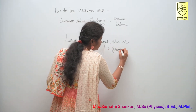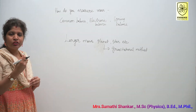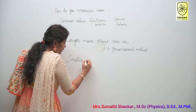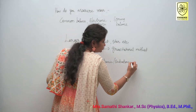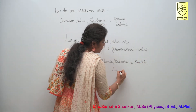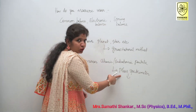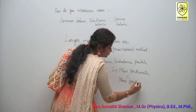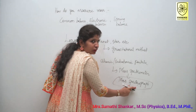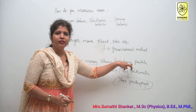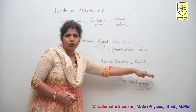For larger masses, we use the gravitational method. For smaller masses like atomic or subatomic particles, we can use a mass spectrometer. Larger mass means gravitational method; smaller masses means mass spectrometer.